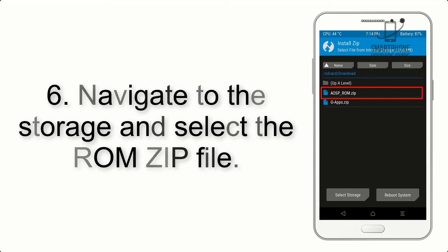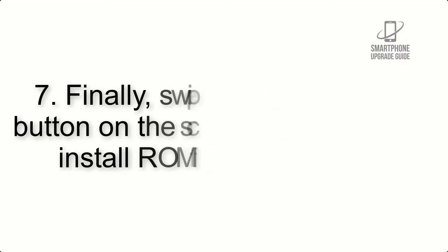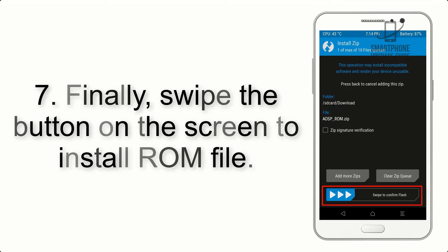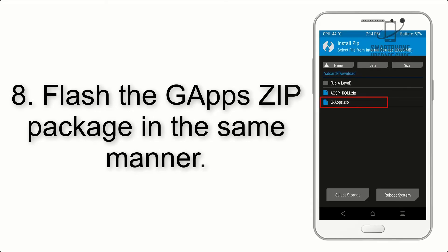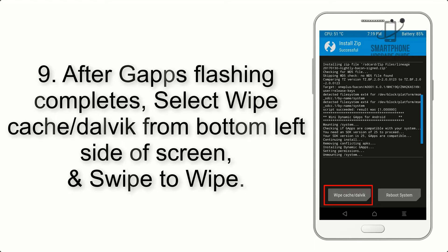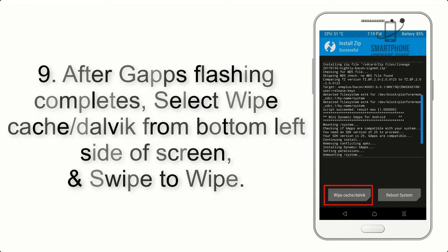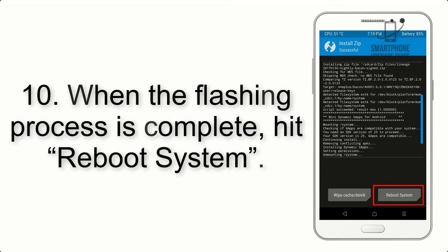Step 6: Navigate to the storage and select the ROM zip file. Step 7: Swipe the button on the screen to install the ROM file. Step 8: Flash the GApps zip package in the same manner. Step 9: After GApps flashing completes, select Wipe Cache and Dalvik from the bottom left side of the screen and swipe to wipe.